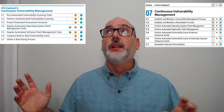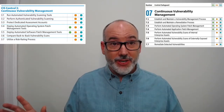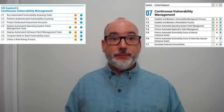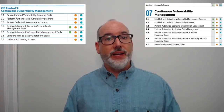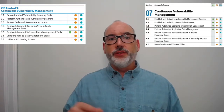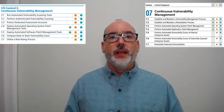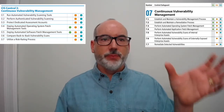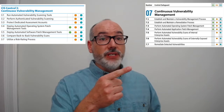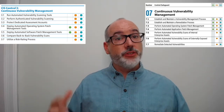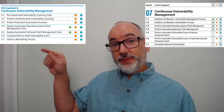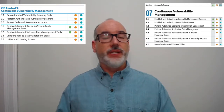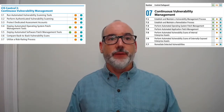Safeguard 7.3 — perform automated operating system patch management — builds on version 7's 3.4 deploy automated OS patching tools, but adds a process around it. Safeguard 7.4 — perform automated application patch management — similarly starts with version 7's 3.5 deploy automated software patch management, again with a process wrapped around it.